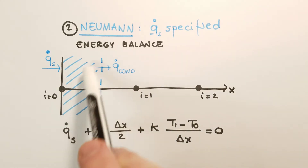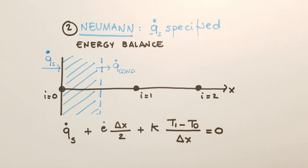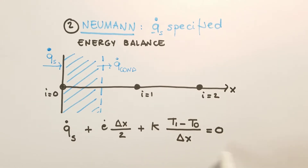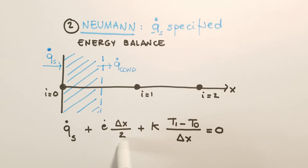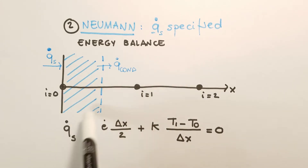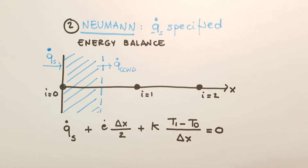By carrying out an energy balance, we can relate q_s — the imposed heat flux that is known — and the heat generation. Note that we multiply by delta x divided by two because that's the thickness of this control volume. And then this is the conduction term by Fourier's law, which involves T1 and T0.